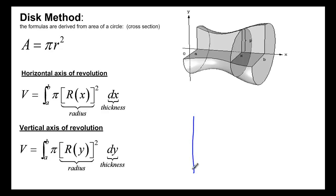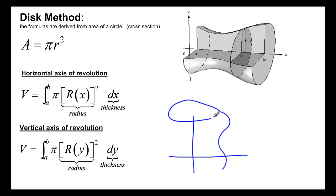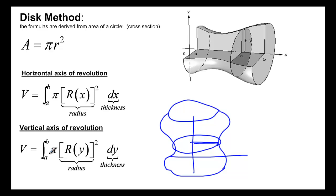The picture would look slightly different. You might have something like this, and you would revolve it around this way. But you would still get your cross-sections being circles — they would just be sliced perpendicular to the y-axis. So we would still use pi times radius squared, but now our radius would be the distance between the function g(y) and our axis.